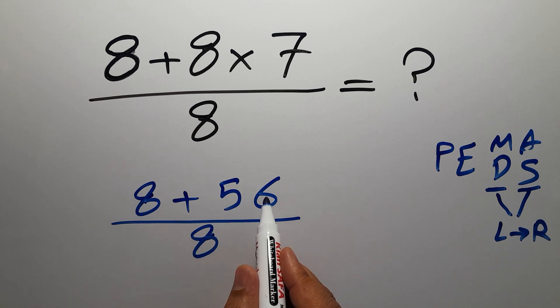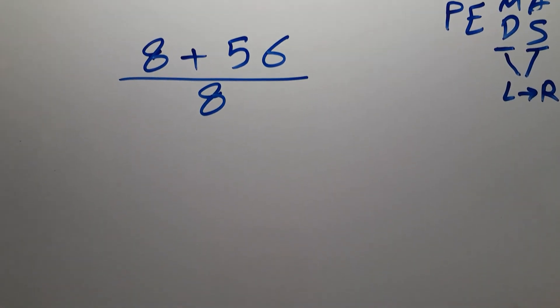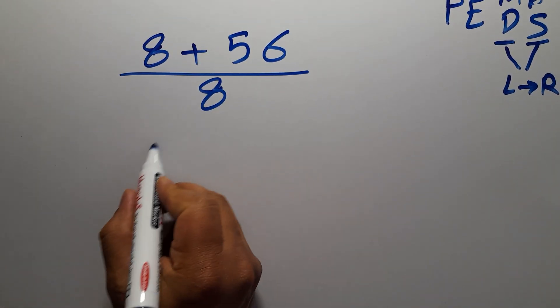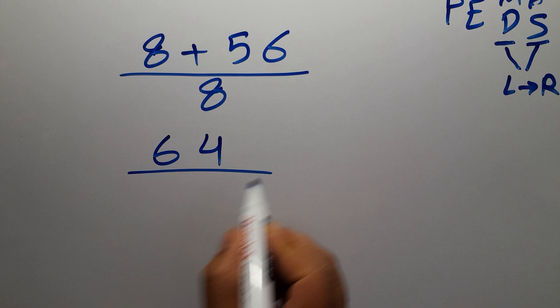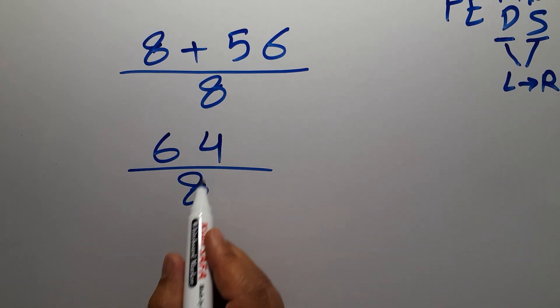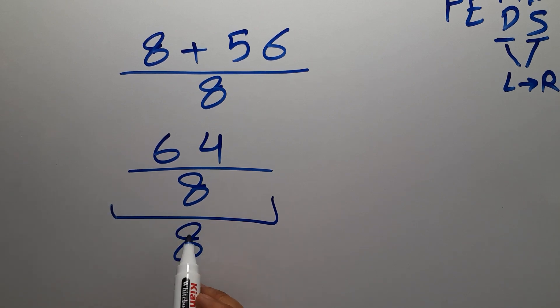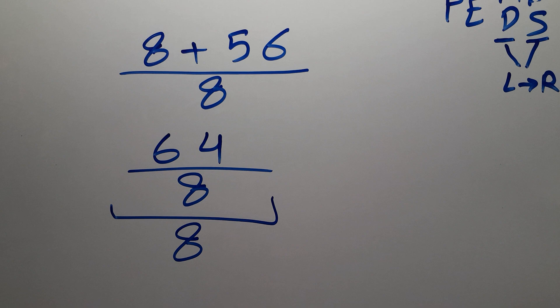8 plus 56 gives us 64, so 64 over 8. 64 divided by 8 is just 8. Therefore, our final answer to this problem is just 8.